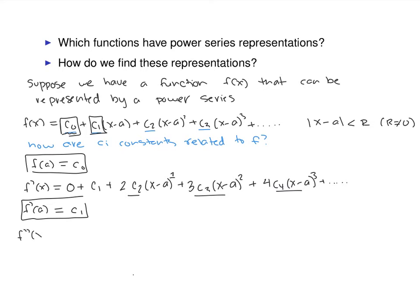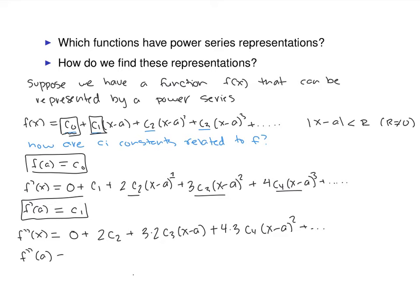The second derivative will also have the same radius of convergence. The derivative of c1 is 0. We'll have plus 2c2, plus 3 times 2 times c3 times x minus a, plus 4 times 3 times c4 times x minus a squared, and so on. When we plug in a, we get that the second derivative at a equals 2c2, which implies that c2 equals the second derivative at a over 2.